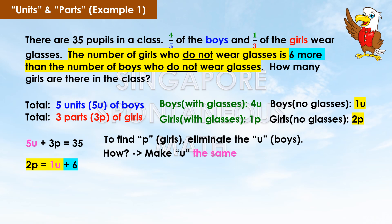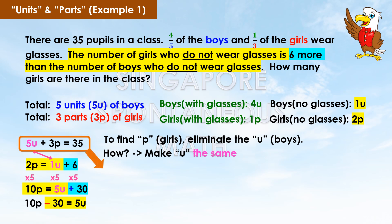To find p, eliminate the u. We do this by making u the same. Multiplying gives: 10p equals 5u plus 30, so 10p minus 30 equals 5u. Substituting back: 10p minus 30 plus 3p equals 35, giving 13p equals 35 plus 30, which is 65.